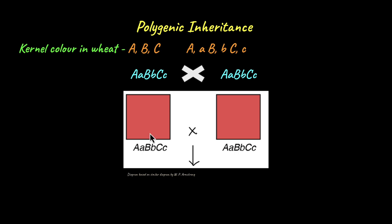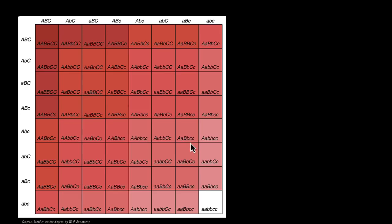So here we have the two plants which are pinkish in color, and we are going to cross them to obtain this Punnett square.